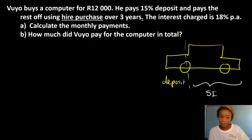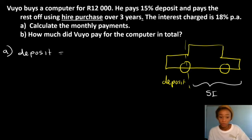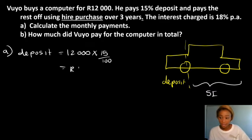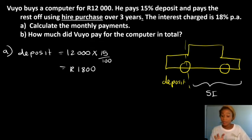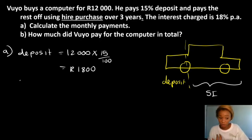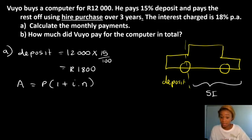So let's first work out how much the deposit will be. The deposit is equal to 12,000 rands times 15 over 100, which gives us 1,800 rands. Vujo has already paid this 1,800 up front. So the remaining amount he has to take out a loan for. We use A equals P times (1 plus i times n), because they charge simple interest on the loan.